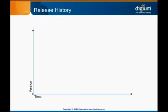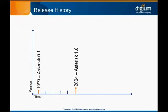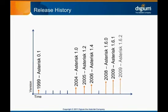The very first open source version of Asterisk was announced in December of 1999. It took a few years for the project to gather inertia and contributors, but by 2004 the 1.0 release was announced. Major versions 1.2 and 1.4 followed in 2005 and 2006. For the 1.6 release family, there were three major releases in 2008 and 2009. Asterisk 1.8 was released in 2010.